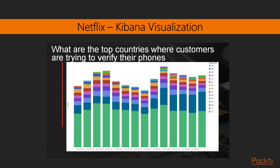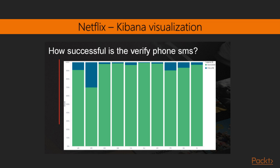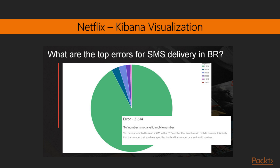They found out that the USA, Brazil, and the UK had the highest number of customers using the phone number verification method. But when they saw the success percentage for each country, the success percentage for Brazil was around 70%, and hence they had to drill down the issue further to analyze why they had such a low success percentage in Brazil alone.